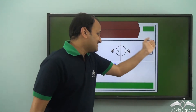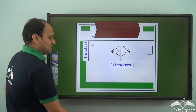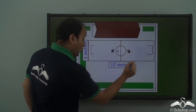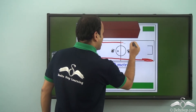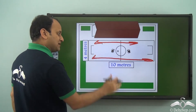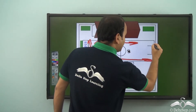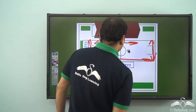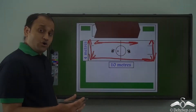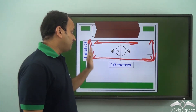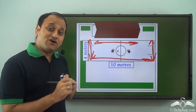This is the area they have decided for playing football. The length of this area is 10 meters, so this side is 10 meters and the opposite side is also 10 meters. This side is 4 meters, so the opposite side is also 4 meters. We have 10 meters as length and 4 meters as breadth. The perimeter is nothing but the sum of the lengths of all the sides.